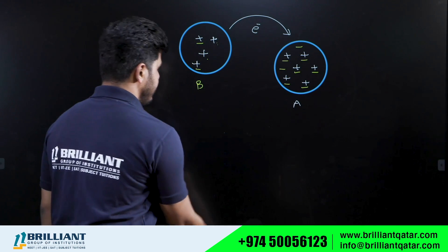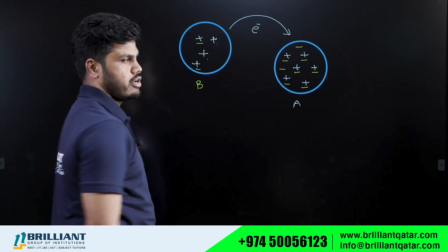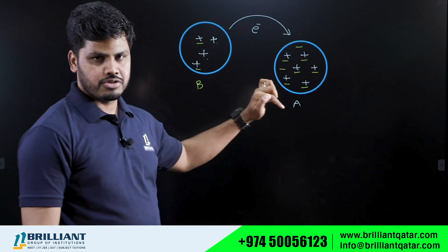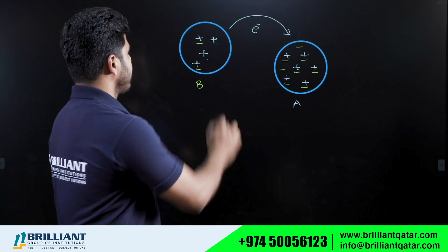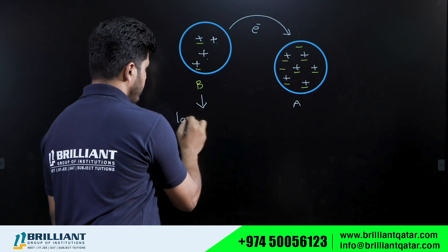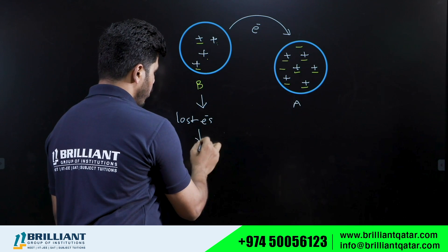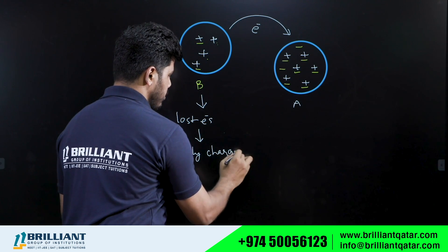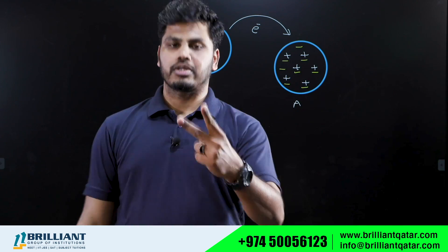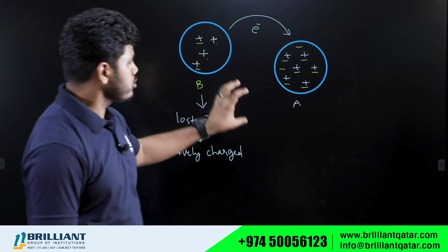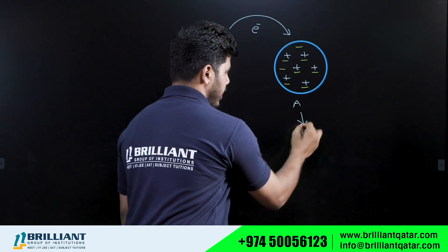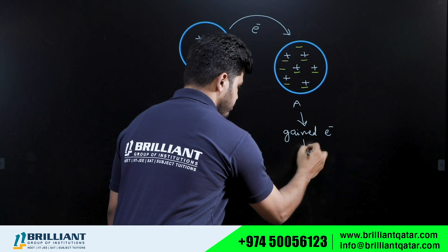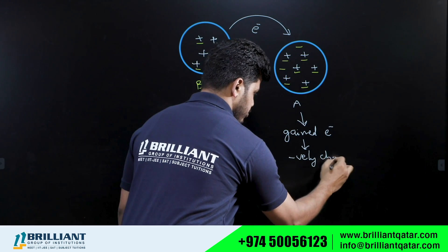Electrons are lost by body B and gained by body A. Now in body B there are four positive charges but only two negative charges, so it is no longer electrically neutral — it has excess positive charge. The body that lost electrons will be positively charged. Body A gained those two electrons, so there are excess electrons in body A, and therefore body A will be negatively charged — it has excess electrons.